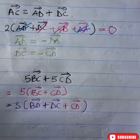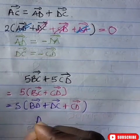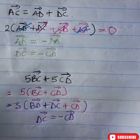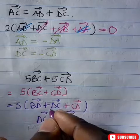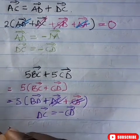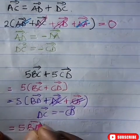Now again, DC is equal to negative CD or vice versa. So this will cancel this. So this automatically cancels this. So we are left with 5BD.